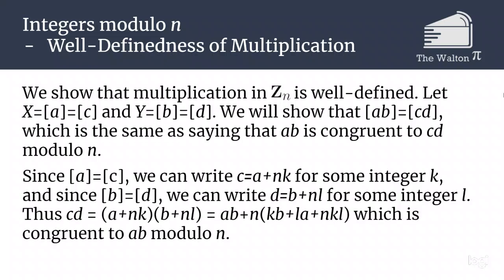Since the class of a equals the class of c, we can write c as a plus nk and d can be written as b plus nl. We multiply c and d together and we get a plus nk times b plus nl, which gives us ab plus n times some integer, which is congruent to ab modulo n, which tells us that multiplication is well defined.